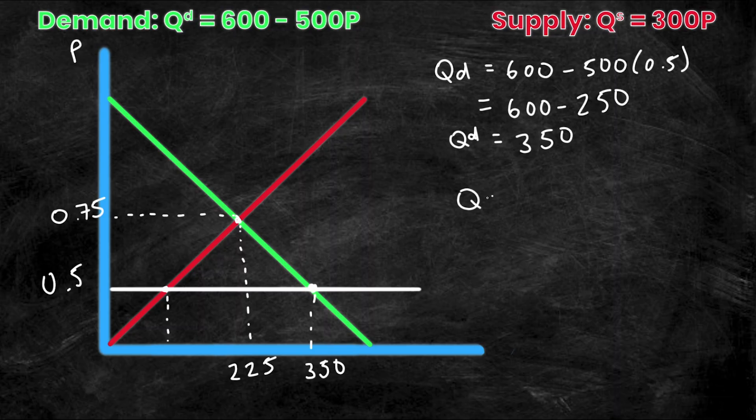So where the demand curve intersects this price line is at 350 units over here. On the contrary, QS, let's sub it into this equation, see what happens. 300 times P, which is 0.5. And this is simply equal to 150, which is over here somewhere.